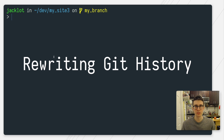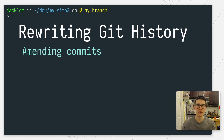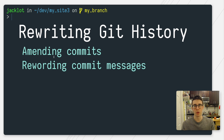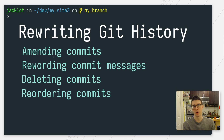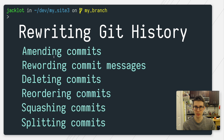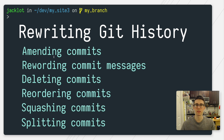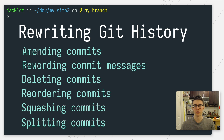There are quite a few ways, but specifically we're going to go into amending commits, rewording commits, deleting commits, reordering commits, squashing commits, and then splitting commits. We're going to go through them each one by one. If you prefer to jump straight to one of them, you can check the description — I've left a link to the timestamp, or a link to my written article which has all the commands written out, so you can use it as a reference.